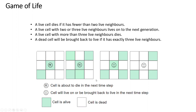If you have two or three live neighbors and you are alive, you continue living. This cell, for example, has three alive neighbors — it's happy, it's going to continue to live. If it has only one alive neighbor, it cannot live further and is going to die. If you have too many alive neighbors — like four — you die in the next step. And if you are a dead cell, you need exactly three alive neighbors to become alive.